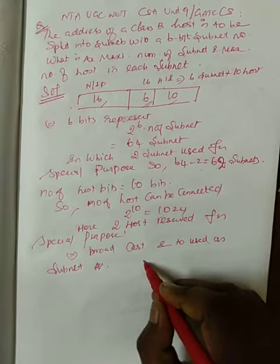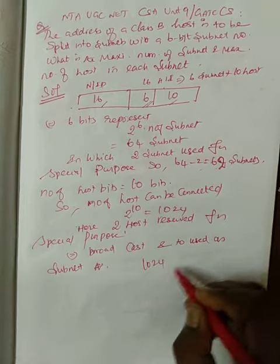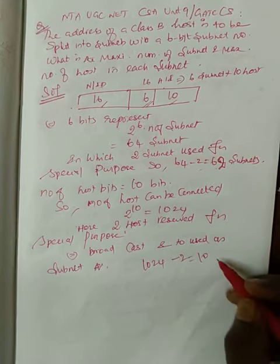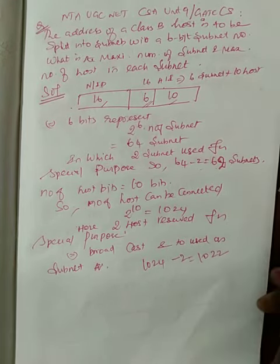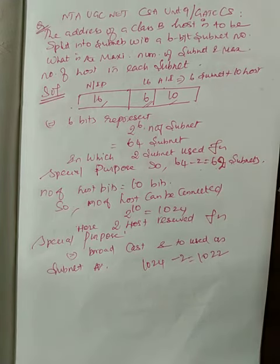Which is nothing but 1024 minus 2 equals 1022, the number of hosts we can connect in each and every subnet.